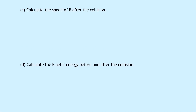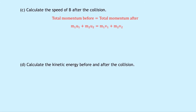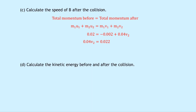Part C says to calculate the speed of B after the collision — the unknown V2. Using conservation of momentum: M1U1 plus M2U2 equals M1V1 plus M2V2. We can skip steps using our answers from parts A and B: total momentum before was 0.02, and momentum of vehicle A after was minus 0.002. So rearranging: 0.04 V2 equals 0.022. Dividing both sides by 0.04 gives V2 equals 0.55 meters per second.